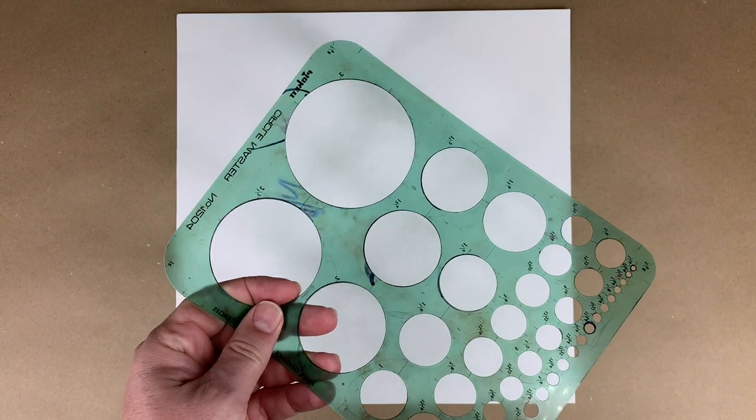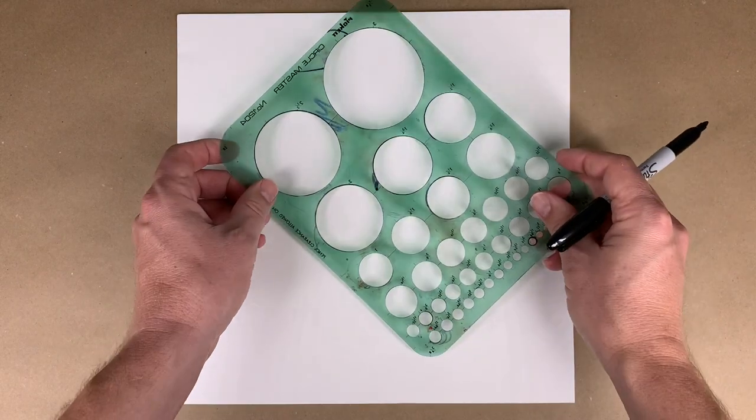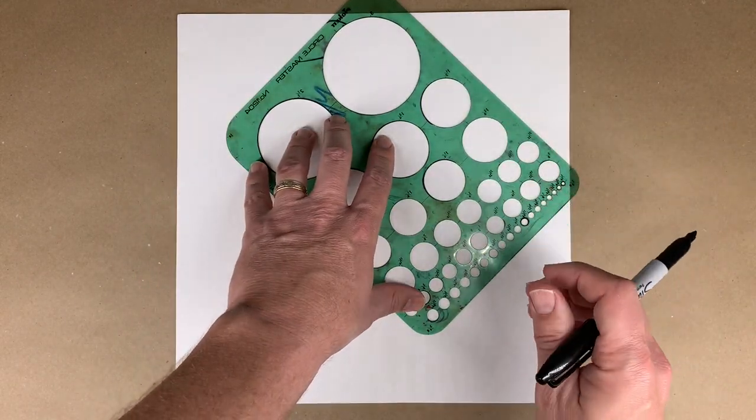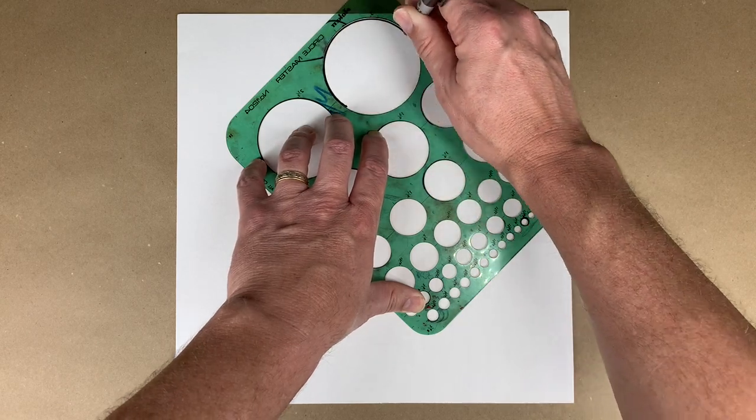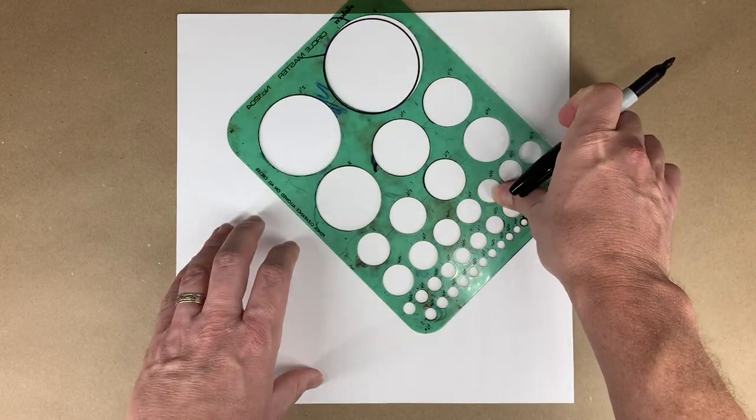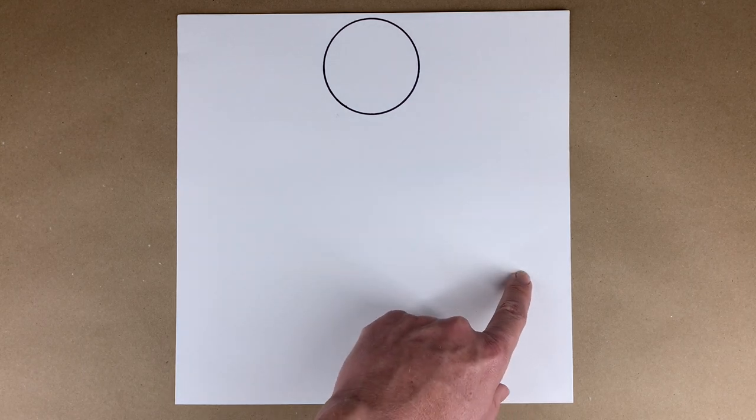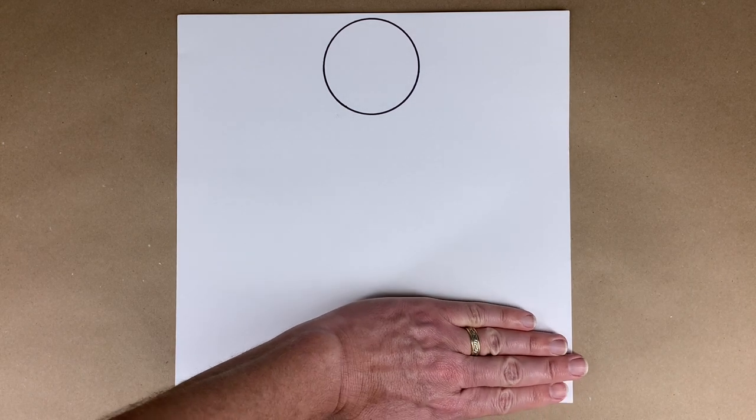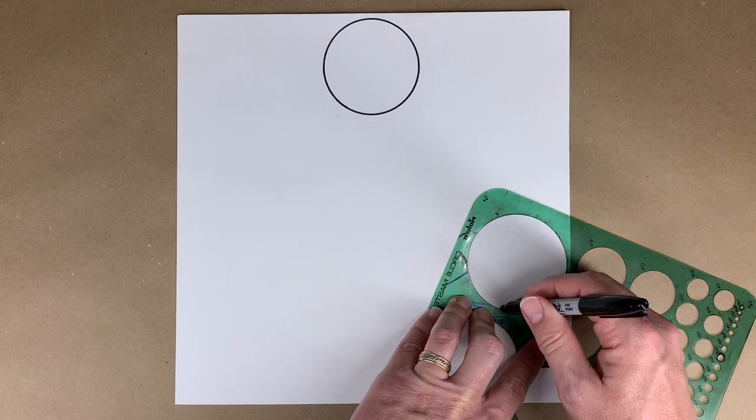Take your circle stencil or bottle cap, something to trace a circle with, and place it at the top center of your page. Then we're going to hold the stencil still and trace a circle. Now we're going to draw a circle here. Measure about four fingers from the bottom of the page and put your circle there. Trace a second circle.